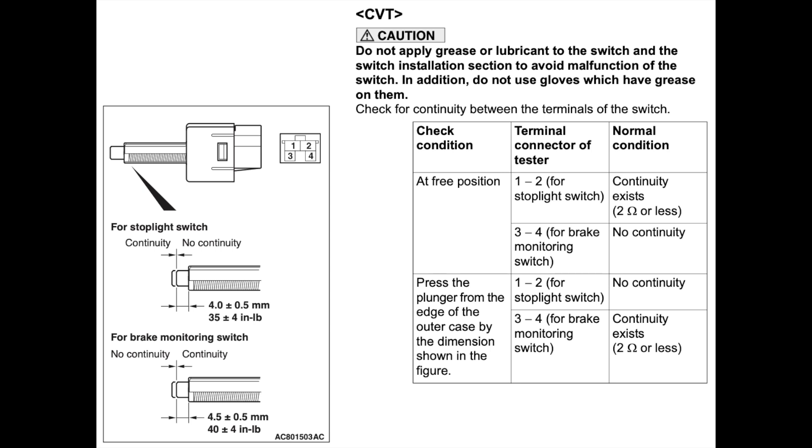For vehicles with cruise control, a 4-terminal stoplight switch is used. First, terminals 3 and 4 have the inverse behavior of terminals 1 and 2, so when the lights are on, terminals 3 and 4 have no continuity, they are disconnected. And when the brake lights are off, terminals 3 and 4 have continuity.